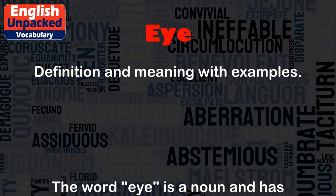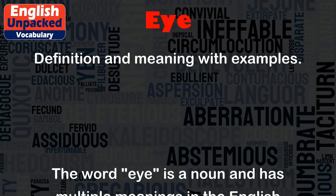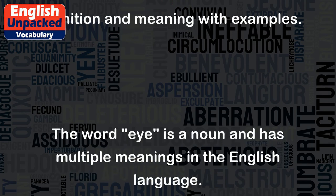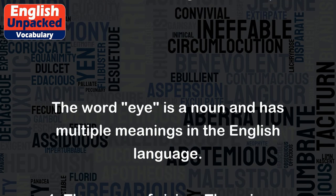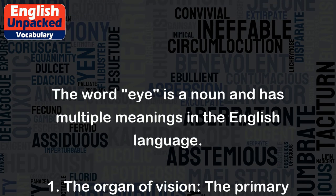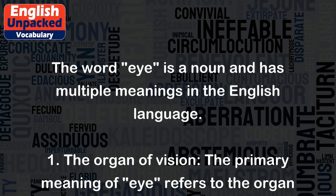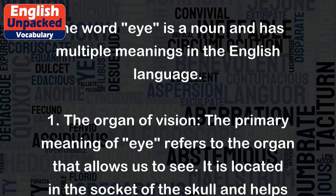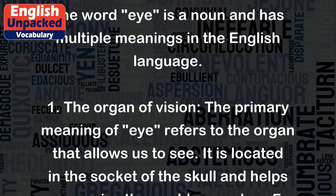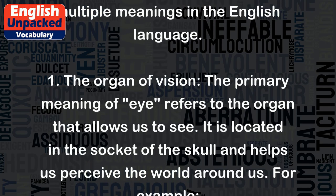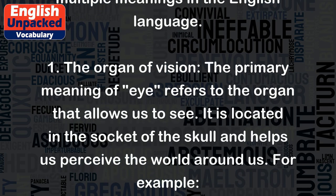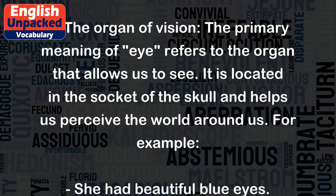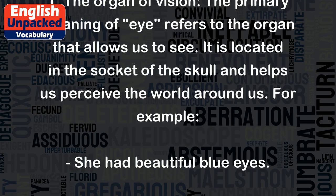Eye. The word 'eye' is a noun and has multiple meanings in the English language. The primary meaning of eye refers to the organ that allows us to see. It is located in the socket of the skull and helps us perceive the world around us.